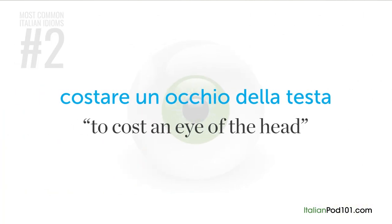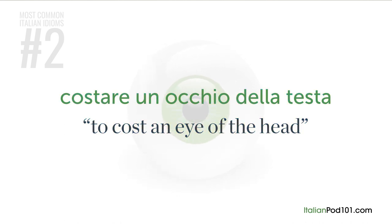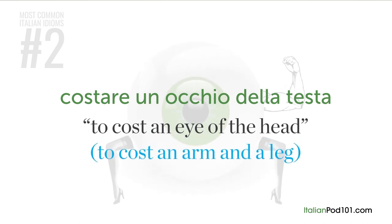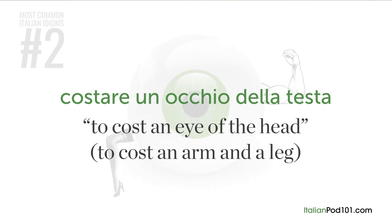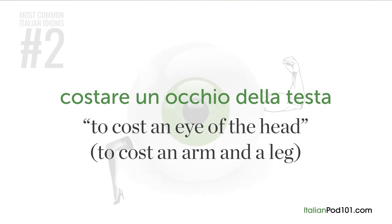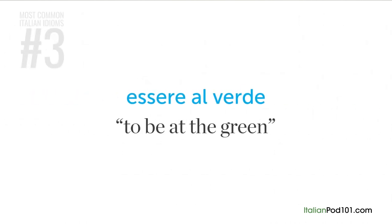Costare un occhio dalla testa — literally 'to cost an eye of the head.' This has basically the same meaning as the English idiom 'to cost an arm and a leg' — it means that something costs so much that you'd have to sell a part of your body to afford it. Essere al verde — literally 'to be at the green,' but it actually means to be broke.